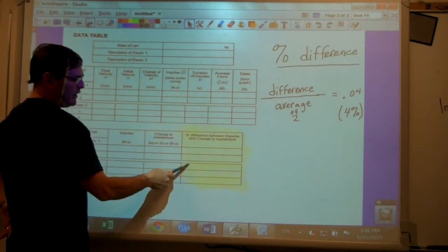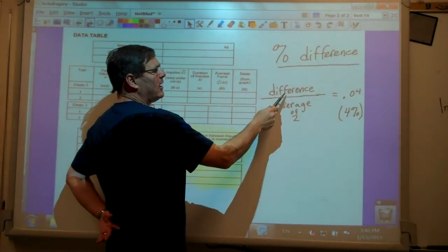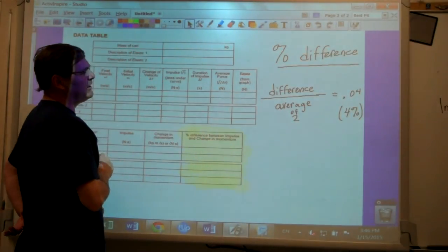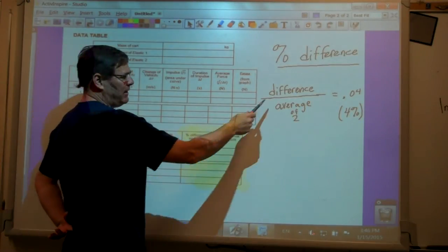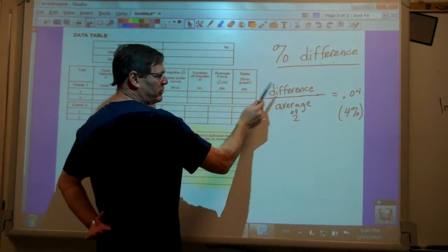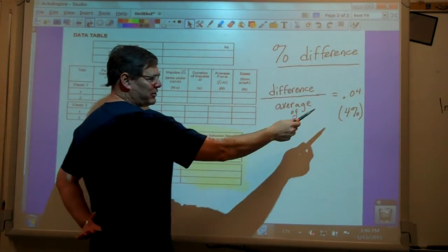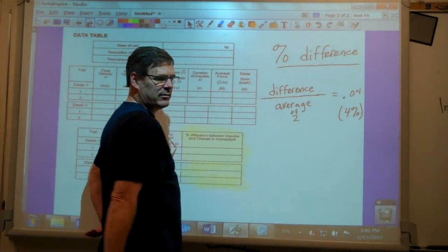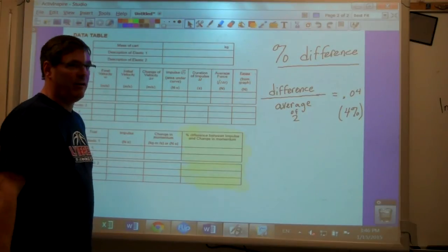Then in this area here, the percent difference. This is how you calculate it. The difference of the change in momentum using the force graph and the change in momentum using the motion detector. Take the difference of those two and then divide it by the average of those two. And just as an example, you might get 0.04. That, of course, relates to or equates to 4%.